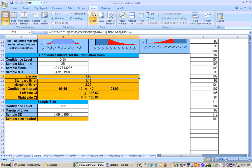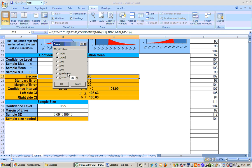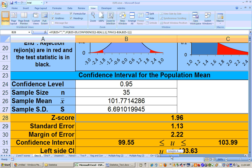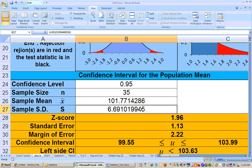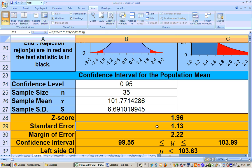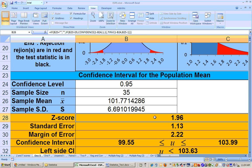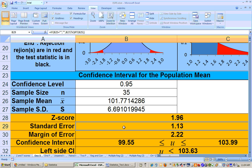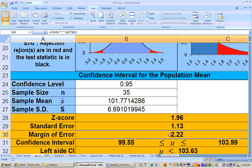Here's my Z-score of 1.96. Here's my standard error, which is calculated by taking your sample standard deviation divided by the square root of your sample size. So it's 6.69 divided by the square root of 35. If you take your Z-score times your standard error, you get your margin of error. Our margin of error is 2.22.